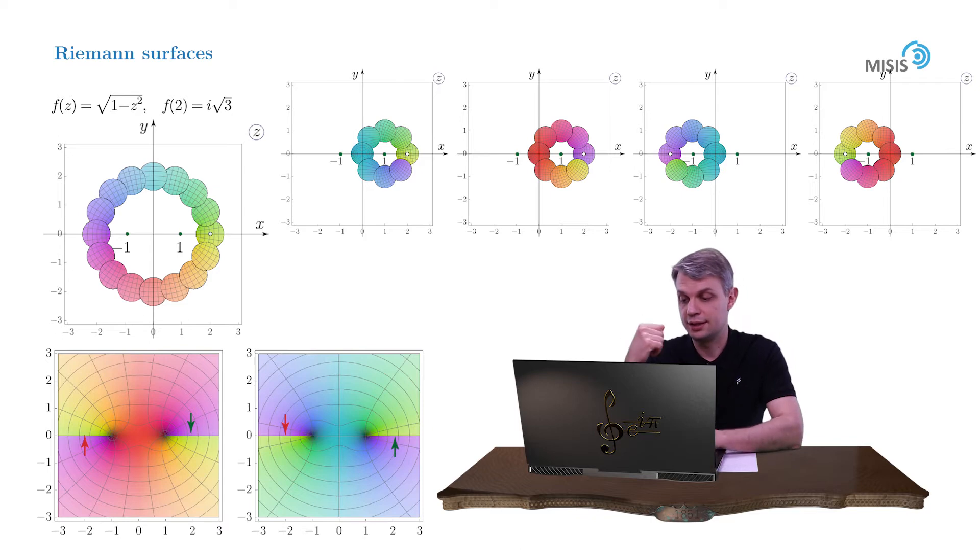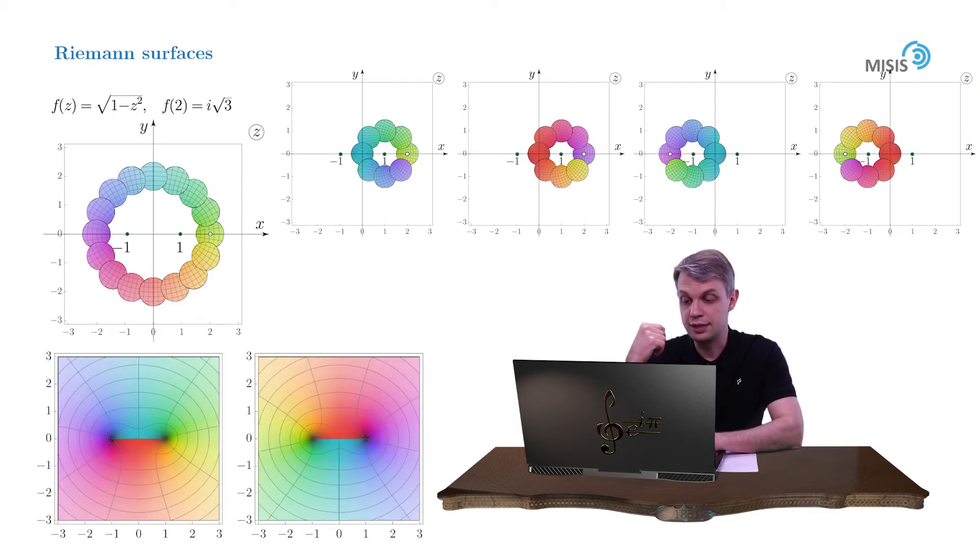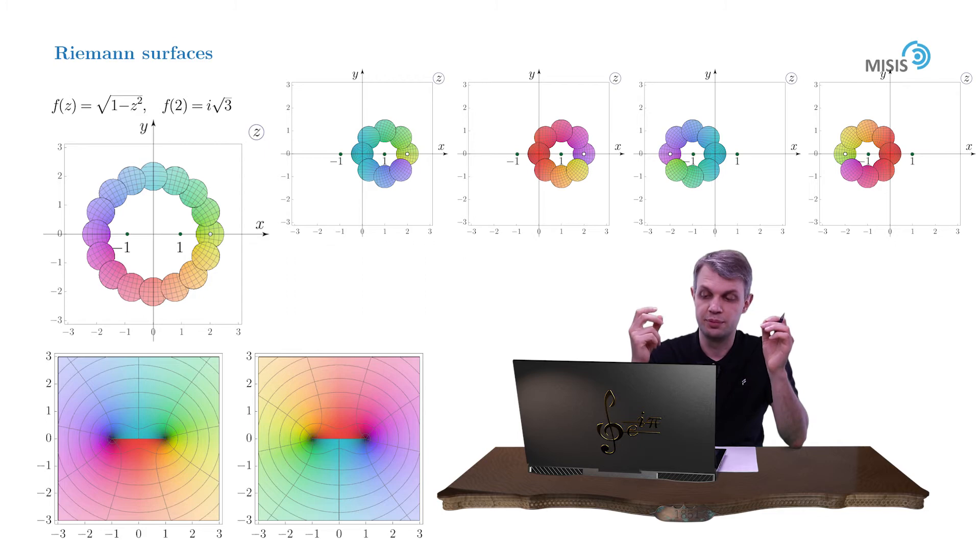Now consider a second option which is now presented on your screen and it corresponds to the branch cut connecting points negative 1 and 1. And here again you deduce similar connection rules.